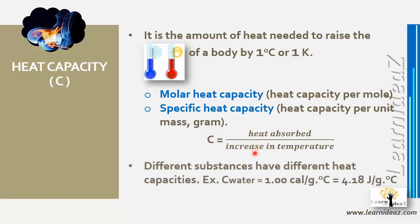Different substances have different heat capacities. For example, water has a heat capacity of 1 calorie per gram degree Celsius, which equals 4.18 joules per gram degree Celsius. So 1 calorie equals 4.18 joules — we can use this conversion factor in problems.